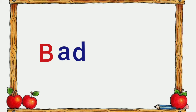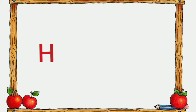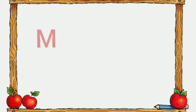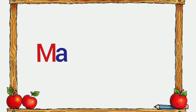Next one: H-A-D, had. Letter sounds: H, A, D, had. Mad — M-A-D, mad. Let's read all ad words.